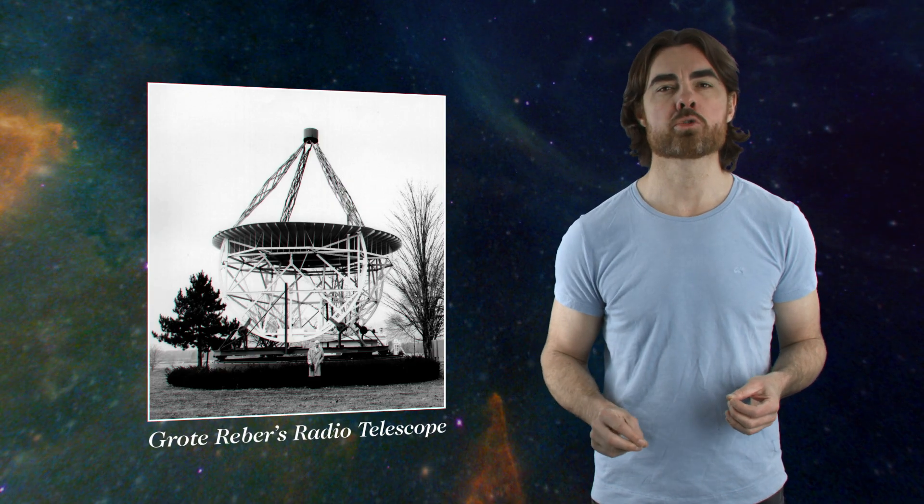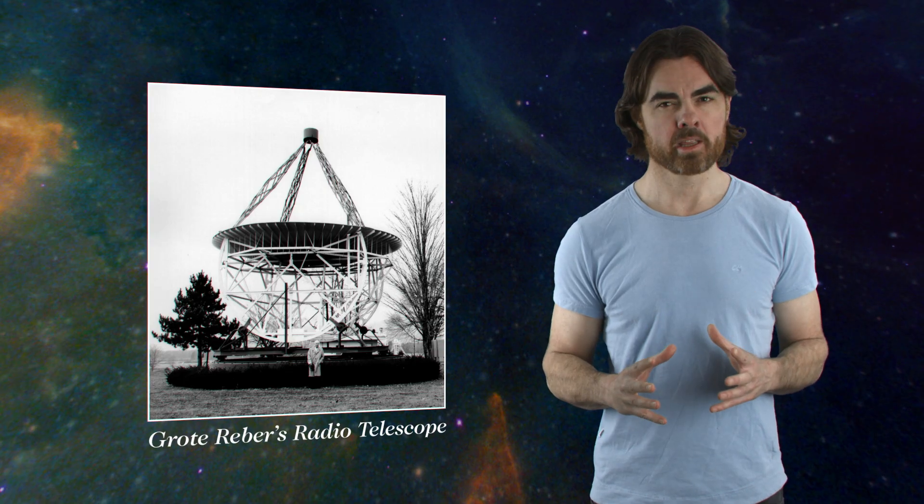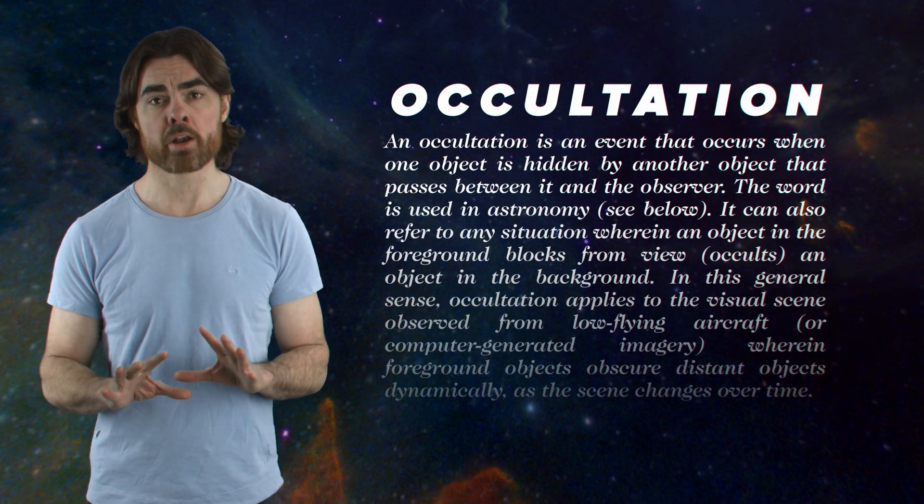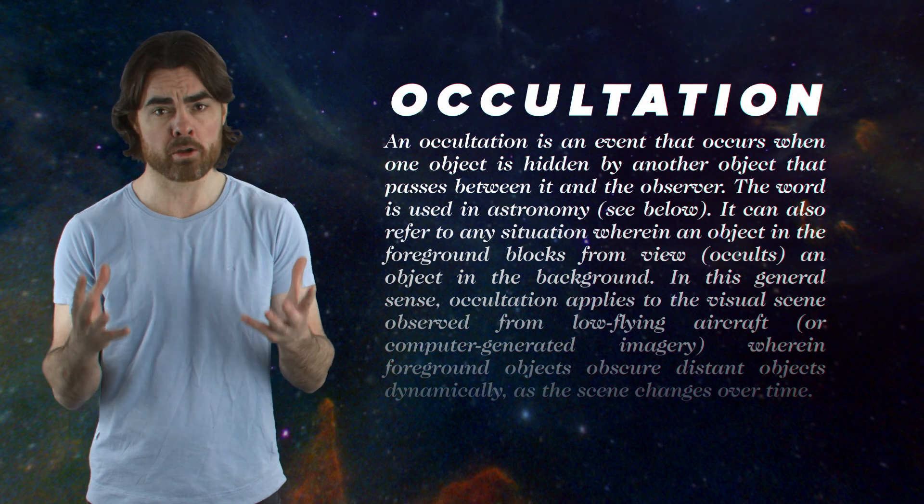Then, in 1962, astronomers caught a break. In an event known as an occultation, the moon passed right in front of one of the brightest of these radio blobs.